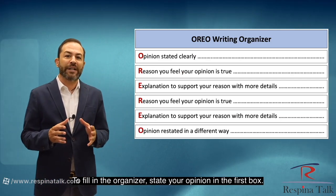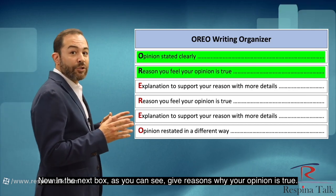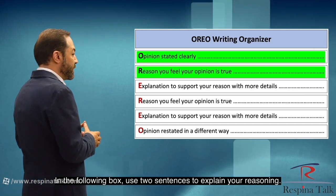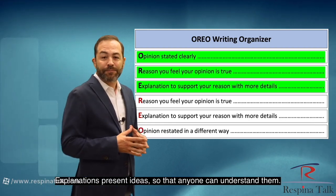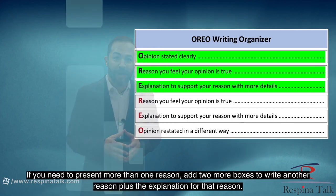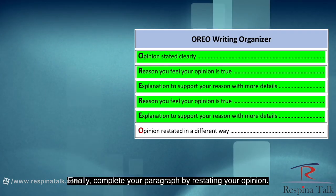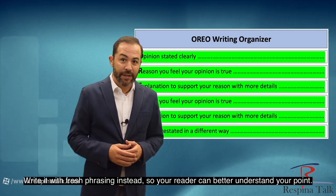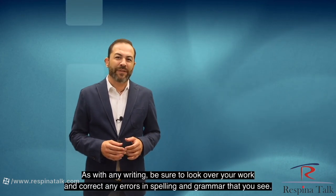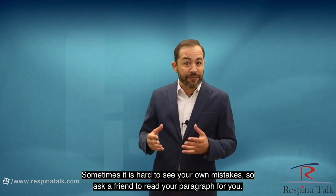To fill in the organizer, state your opinion in the first box. In the next box, give reasons why your opinion is true. In the following box, use two sentences to explain your reasoning. Explanations present ideas so that anyone can understand them. If you need to present more than one reason, add two more boxes for another reason plus its explanation. Finally, complete your paragraph by restating your opinion. Don't write it exactly the same way — write it with fresh phrasing instead, so your reader can better understand your point. As with any writing, be sure to look over your work and correct any errors in spelling and grammar. Sometimes it is hard to see your own mistakes, so ask a friend to read your paragraph for you.